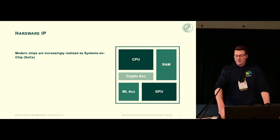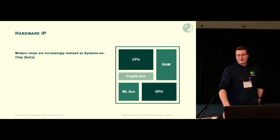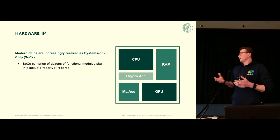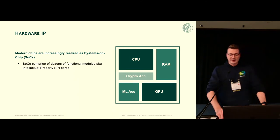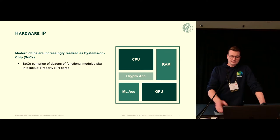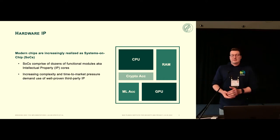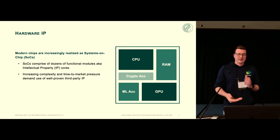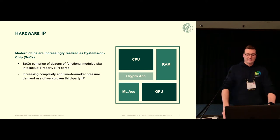Just to give you some background — most of you will already know — but modern chips are increasingly realized as system-on-chips, meaning a SoC consists of dozens or even hundreds of different functional modules. Those functional modules are called IP cores. You can see an example on the right side with a CPU, some crypto accelerator, a machine learning accelerator — different functional components on one chip.